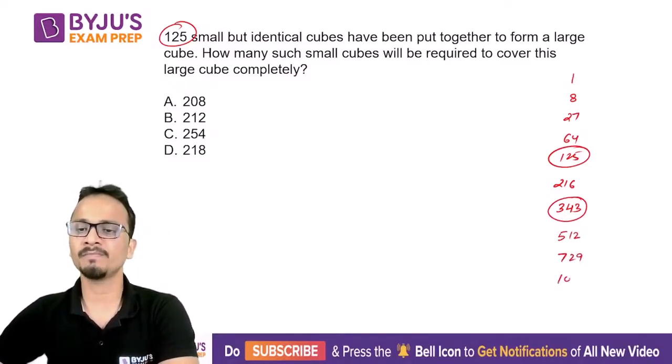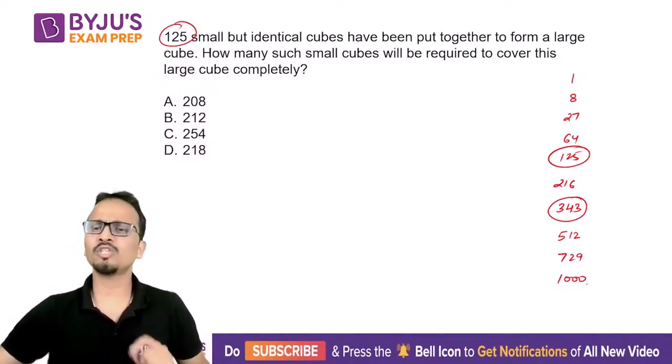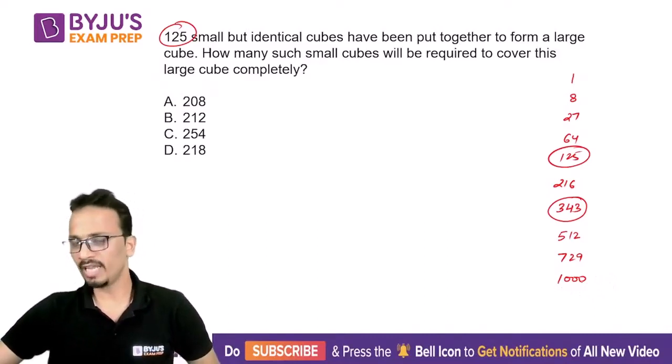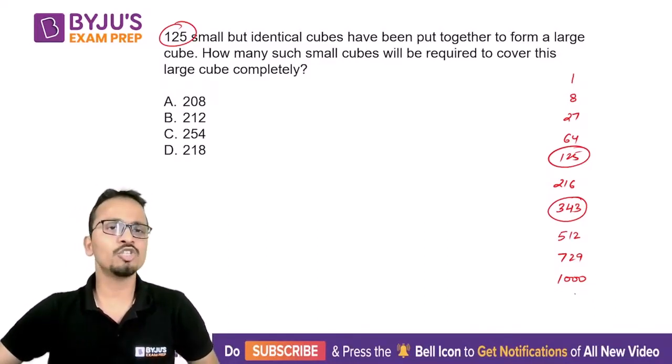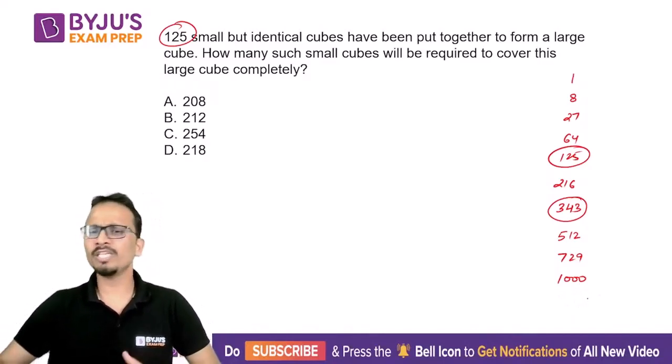8³ is 512, 9³ is 729, and 10³ is 1000. It is always suggested to remember the cubes up till 15.